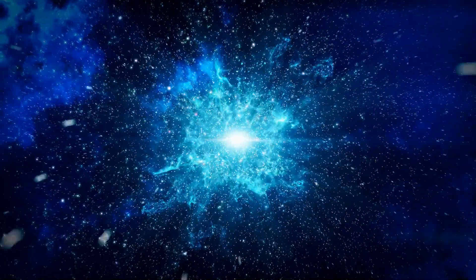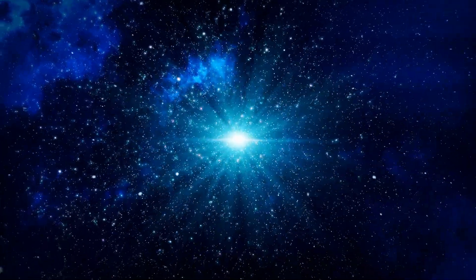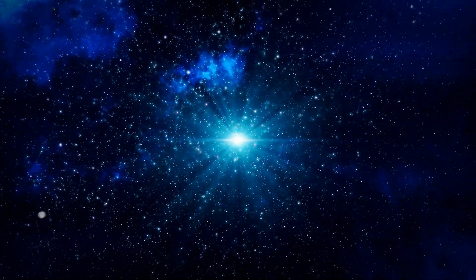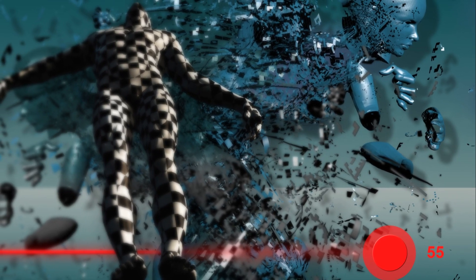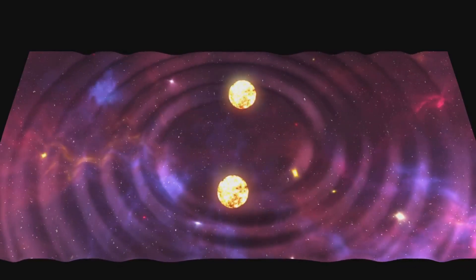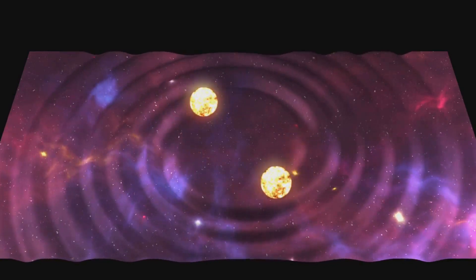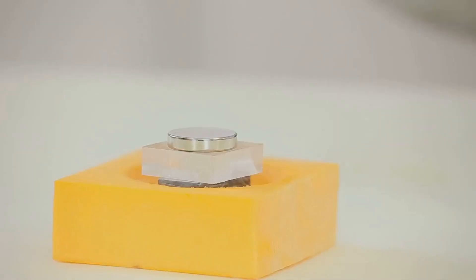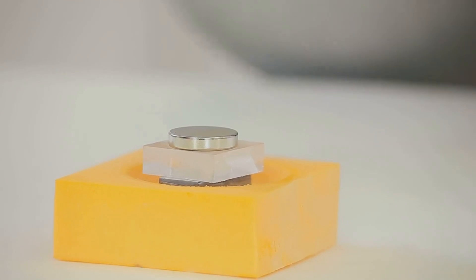Our universe began as a single point, which exploded. One original force splintered into four distinct forces. Gravity separated first, sending shockwaves throughout the young cosmos. Then the strong force followed, and finally electromagnetism and the weak force separated. This all happened in a flash, and after 13.7 billion years, we have today's universe.